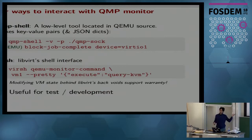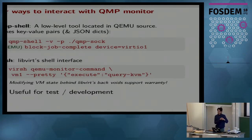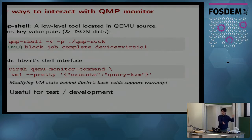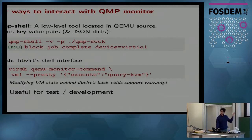There are other ways to interact with the QMP monitor. The QMP shell lives in the QEMU source tree, where you can use key-value pairs so you don't have to type out lengthy JSON commands. You apply a verbose parameter and a pretty-print one so it also prints out the raw JSON if you want, and supply the path to the socket you launched QEMU with. I'll be using this to show some examples in the next slides.